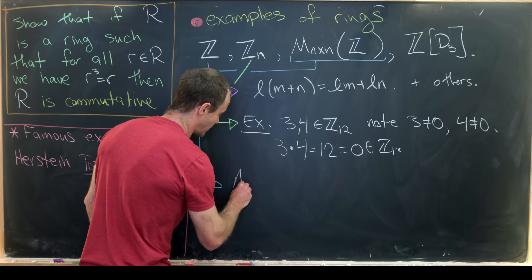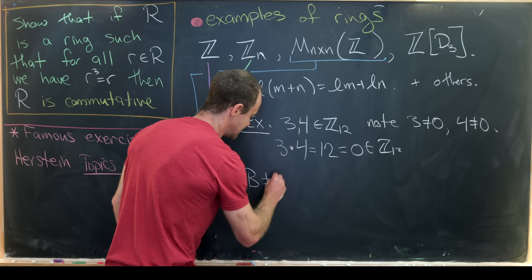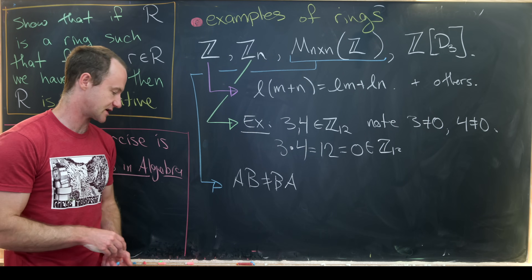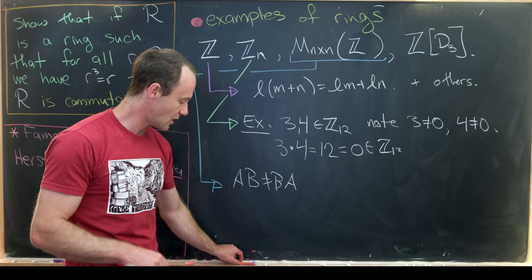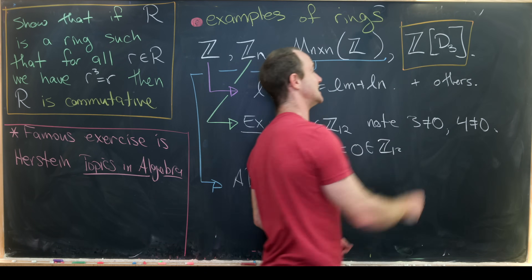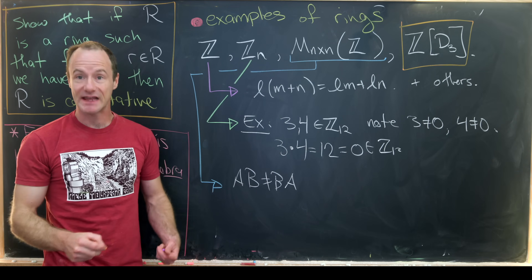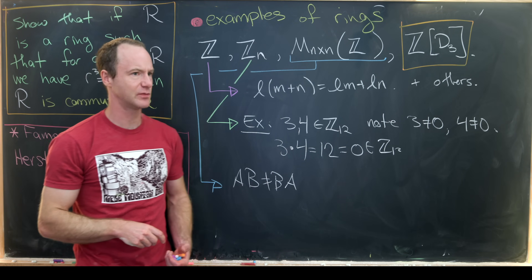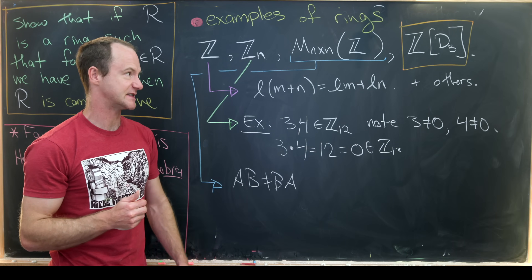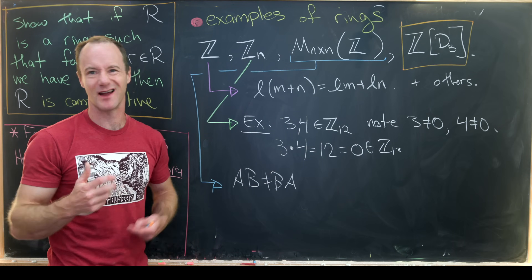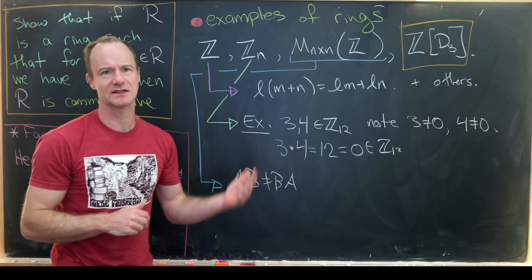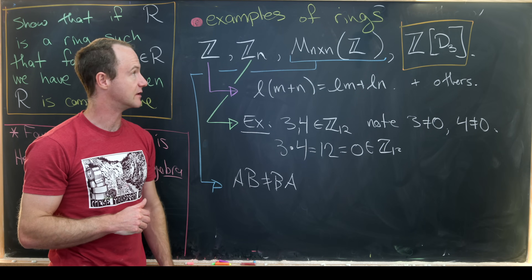For another example, we could look at n-by-n matrices with integer coefficients — or even real number coefficients if we like. This is not a commutative ring: A times B is not equal to B times A in general. It also is not an integral domain; you can multiply non-zero elements and get zero. Group rings, like Z adjoined with the dihedral group, provide further excellent examples of non-commutative rings.